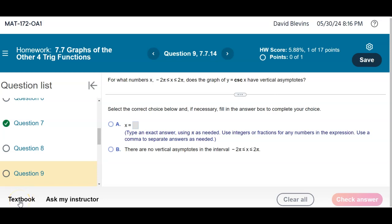Hello, Dr. Class. We're looking at the 7.7 homework set, specifically this question asking about vertical asymptotes for the cosecant function.